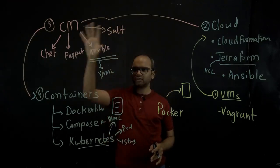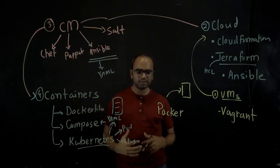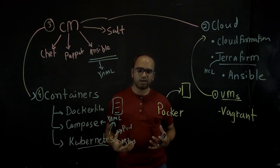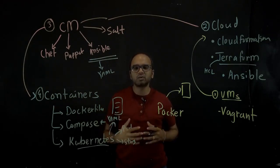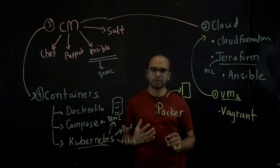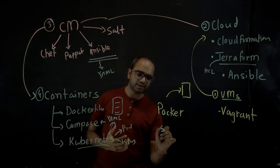Again, when it comes to Kubernetes, all the code is typically written using YAML as a programming language. Now these are the four main categories of infrastructure as code. There's one more category. I'm not sure whether it will fit into exactly infrastructure as code because we are talking about CI/CD.